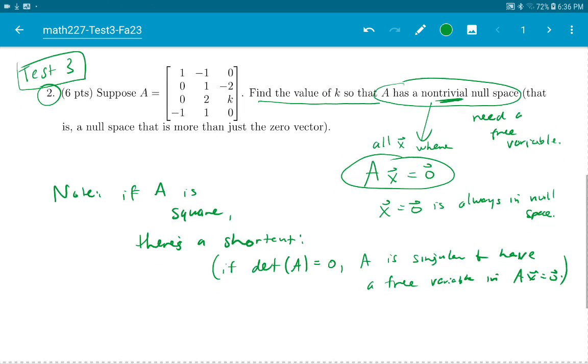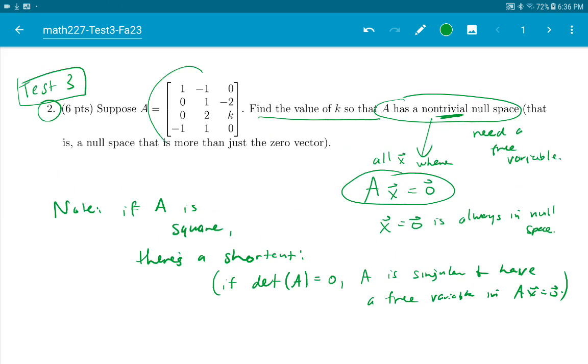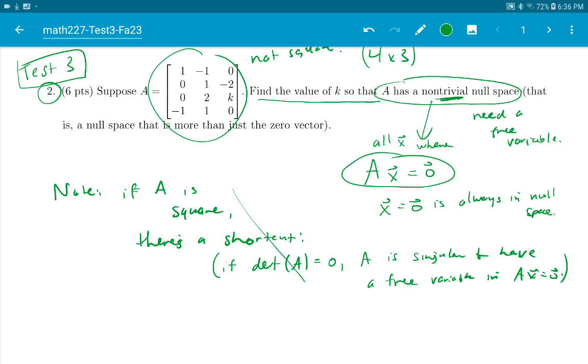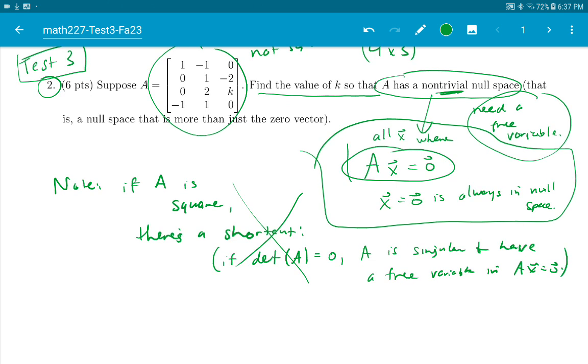But this A is not square. It's not square if you look at it. It's four rows and three columns. So you can't use this shortcut here. But it's okay, we can just do it this way. We need to make sure that there's a free variable. So let's try to solve this.